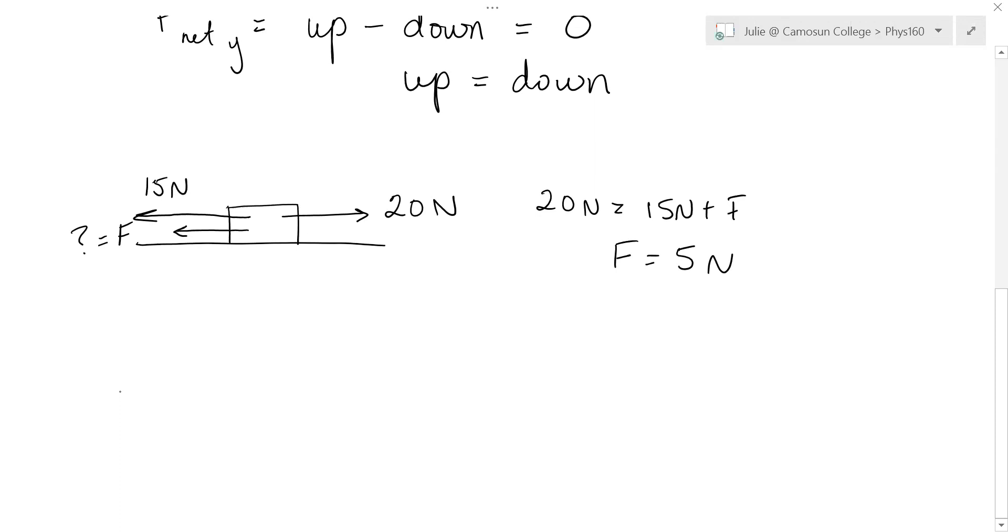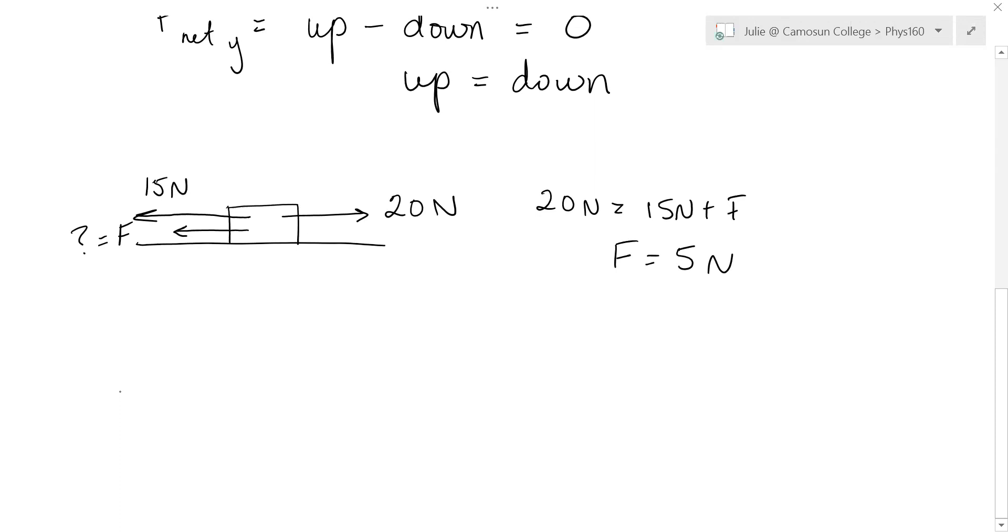Similarly, up and down. We've already seen this when we've had boxes on surfaces. If a box remains on a surface, it means the up forces must balance the down forces. So if there's a normal force and an upward force of 20 and the weight of the box is 80, when you go up equals down Fn plus 20 equals 80, and in this case, the normal force would be 60 newtons.